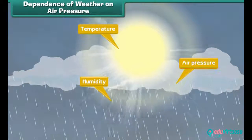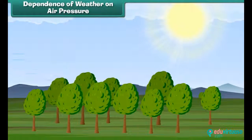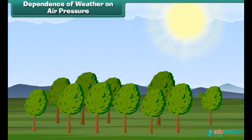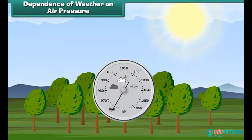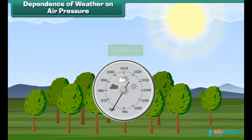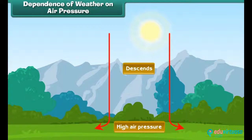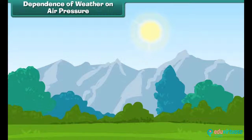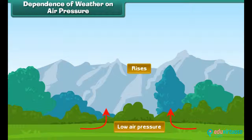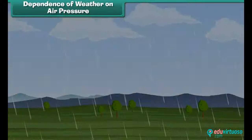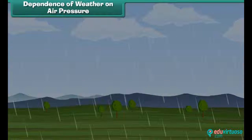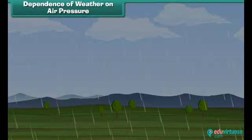Air pressure — you might not realize it, but the air around you actually has a weight. We measure air pressure with a device called the barometer. In areas of high pressure, the air slowly descends to the earth's surface, and high pressure areas are associated with clear, sunny days. In areas of low pressure, air rises up into the atmosphere. Low pressure areas have high humidity, clouds, rain, and other kinds of precipitation.